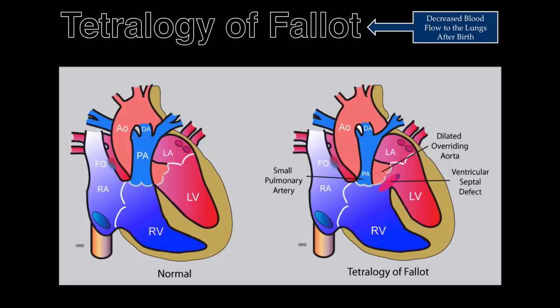Tetralogy of Fallot involves four defects postnatally: a large ventricular septal defect that straddles the overriding aorta, pulmonary artery stenosis, and right ventricular hypertrophy.